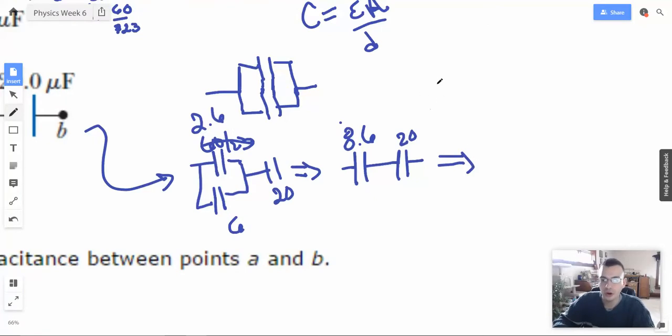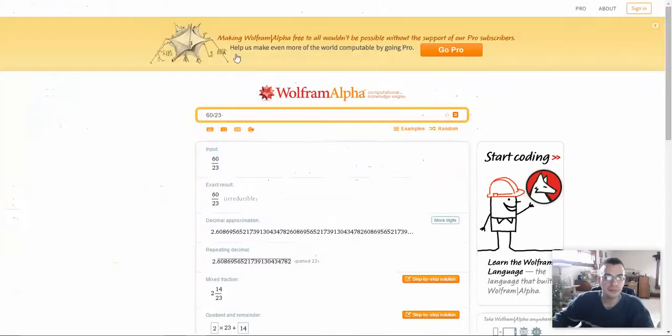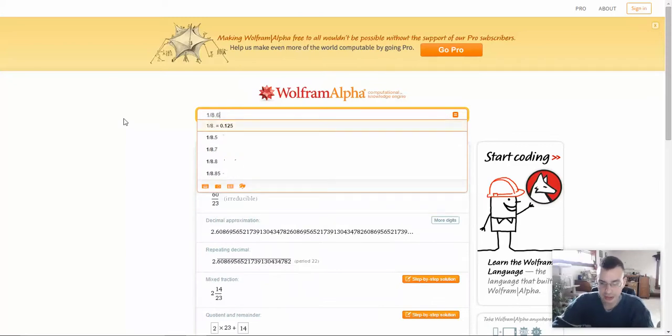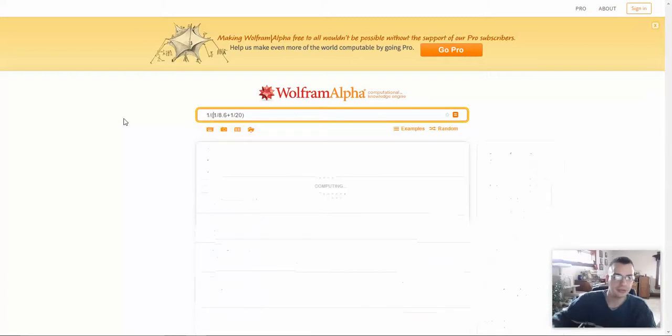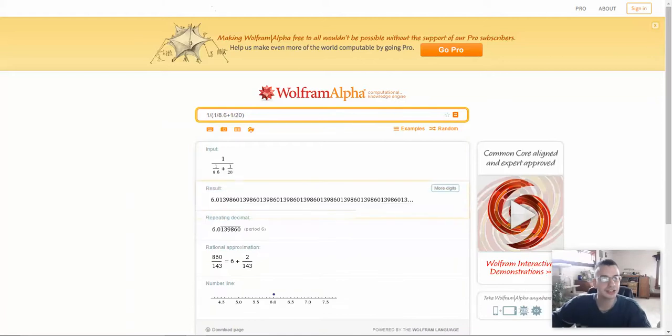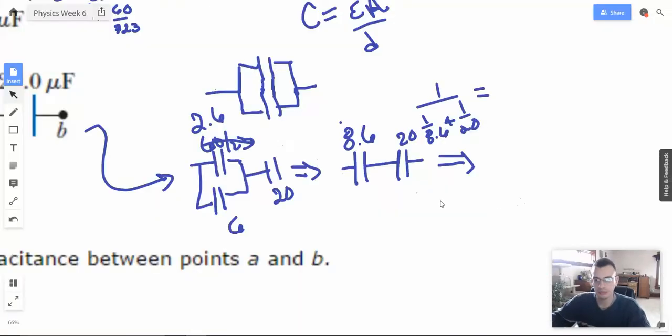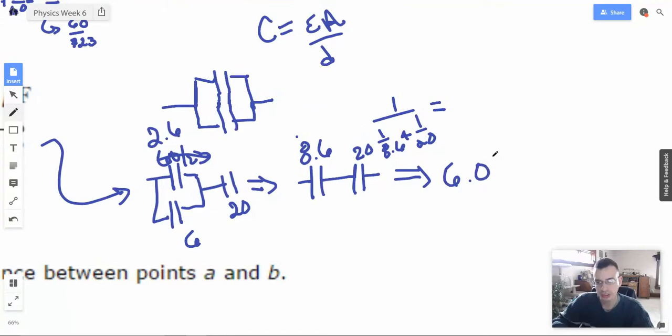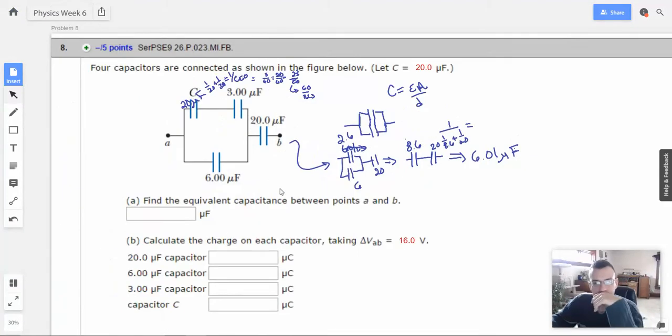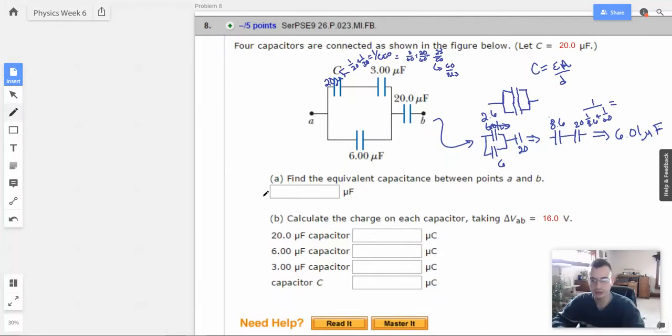And we're going to have 1 over, 1 over 8.6 plus 1 over 20. So when you do this in a calculator, I do this one plus that one, and then 1 divided by answer. 1 divided by 8.6 plus 1 divided by 20. And then we'll do 1 divided by quantity. Seems reasonable. And we get 6.01 microfarads. And that's actually the answer we were looking for here.